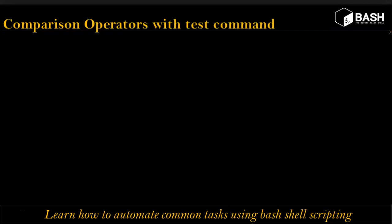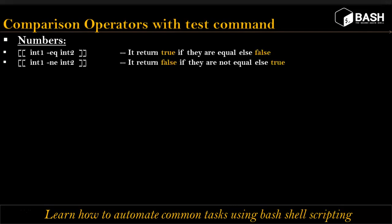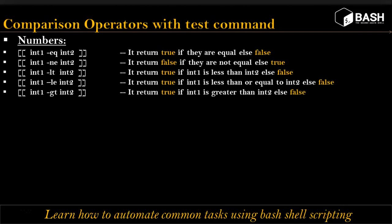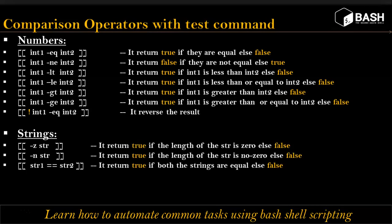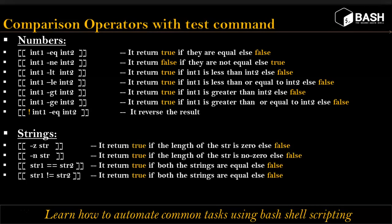Comparison operators come in two sets: the first set is for numbers and the second set is for strings. Let me explain these.